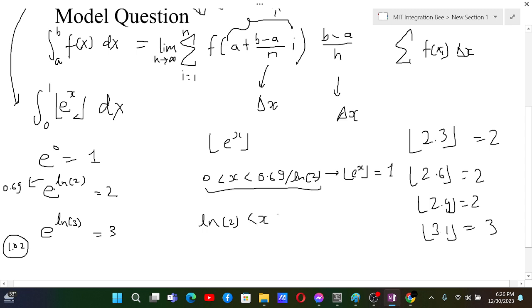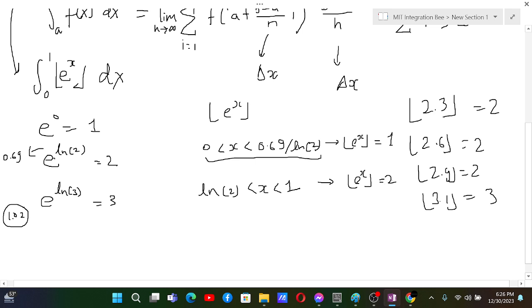And when it's going from ln 2 (0.69) to 1, the value of e to the power x will be 2. And if it was like 1.0 to something like that, then it would have been 3, but because we are just going up to 1, it's just 2.